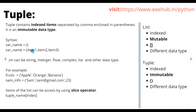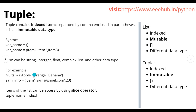A tuple can also contain different data types — for example, string, integer, float, complex, list, tuple, and so on. It can have a single data type like only strings, or it can have a mixture of these data types.